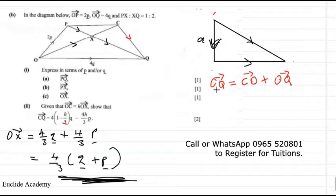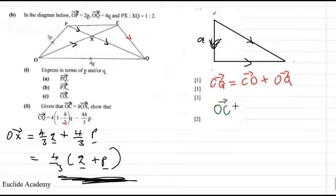When I add OC plus CQ I will get OQ, it doesn't matter whichever way, as long as you're making sense. So you can say, when I add OC.